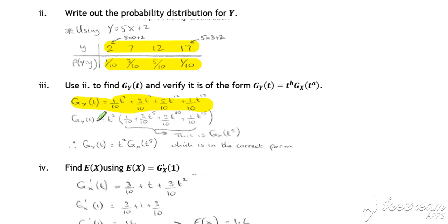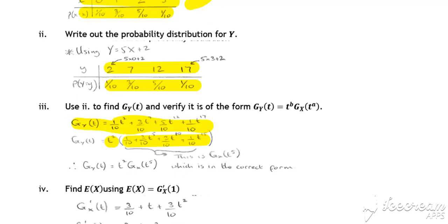You can see that that will be equal to T squared times the thing that's in the bracket, which is the same as the probability generating function of T to the 5.